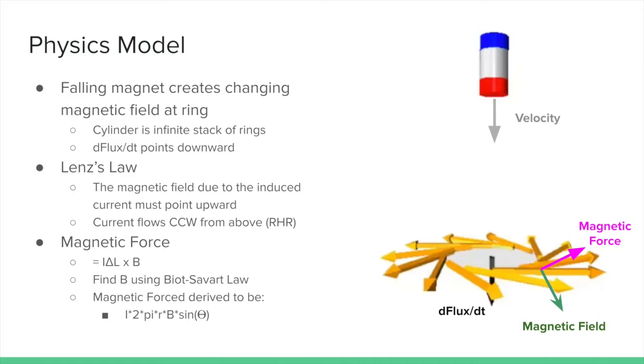The magnetic force can be found by I delta L cross B, where B can be found using the Biot-Savart Law. We can derive the final force expression to be current times 2πr times B times sine of the angle between magnetic force and horizontal.